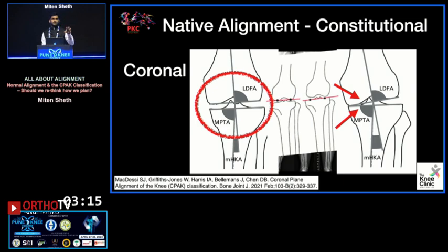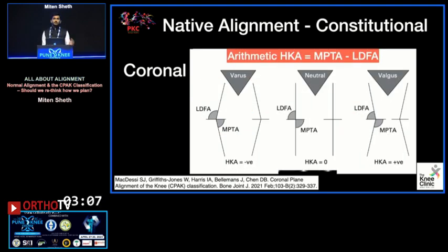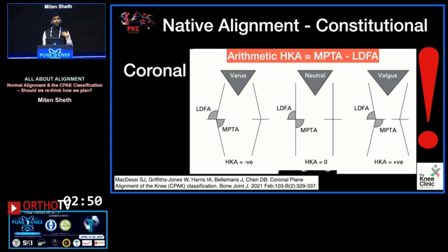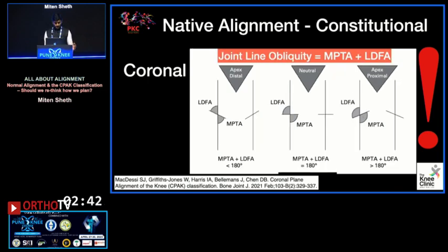Both the LDFA and the MPTA can be correlated with the hip-knee-ankle axis. If there is no great bone loss on the arthritic side, we can use the MPTA and the LDFA to estimate how the femur and tibia were close to the knee joint before the arthritis set in. Almost all patients would be in varus, neutral, or valgus calculated on the basis of the MPTA and LDFA, giving us a target for pre-arthritic alignment. Similarly, we can estimate how the joint line was before arthritis set in.